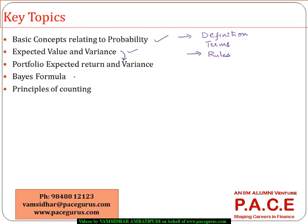Towards the end, there are two key areas involving probability. One is the Bayes formula, sometimes called the Bayes theorem, which is one of the revolutions in the world of probability. And finally, the principles of counting, where we'll be discussing permutations, combinations, and their applications.